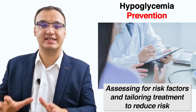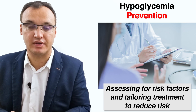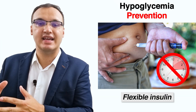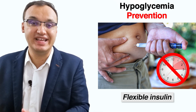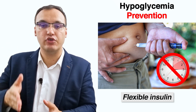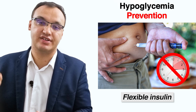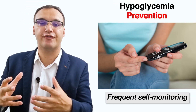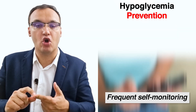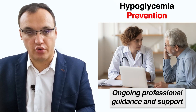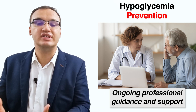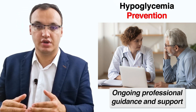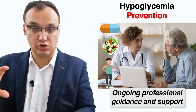The prevention of hypoglycemia involves assessing for the risk factors and then tailoring the treatment to reduce the risk. This involves flexible and rational insulin and other medications. A flexible insulin regimen allows you to adjust the timing and amount of insulin to meet your needs, in contrast with a conventional regimen where you take insulin at set times and follow a strict schedule. A general approach to reducing hypoglycemic risk involves patient education, frequent self-monitoring of blood glucose — usually with a finger stick measurement or a continuous glucose monitoring device — and ongoing professional guidance. Patients should be taught to adjust their medications, meal plans, and exercise based on their glucose patterns during the day.